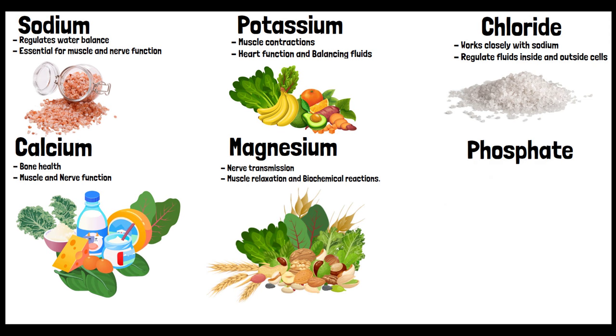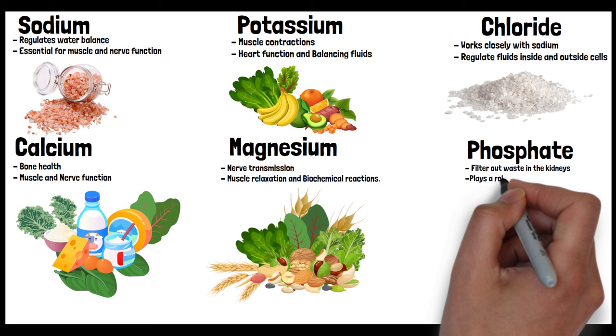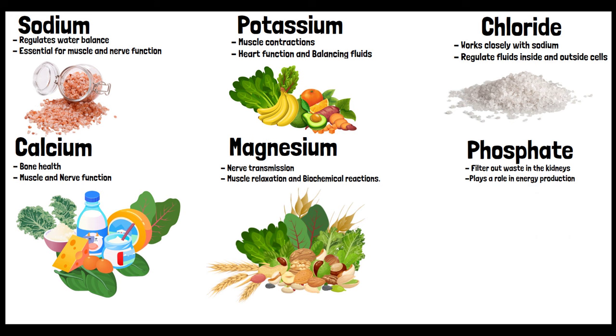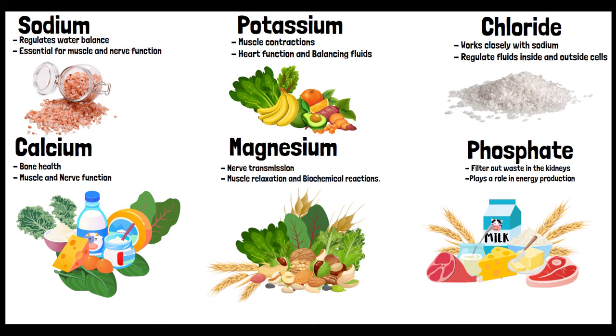Phosphate helps filter out waste in the kidneys and plays a role in energy production. This can be found in dairy products, meat, and whole grains. So, to stay hydrated, it is important to get enough water and to get in electrolytes that will help you get the energy you need.